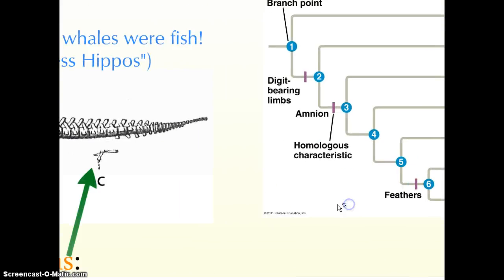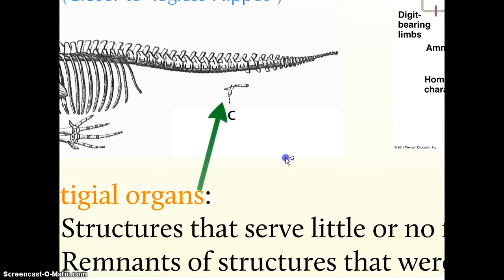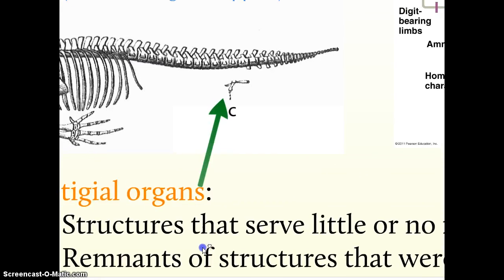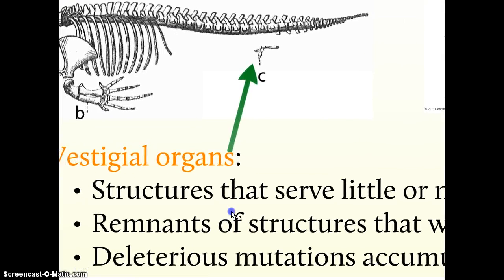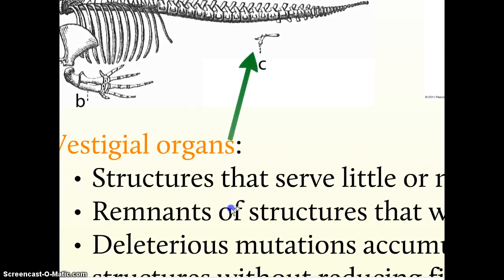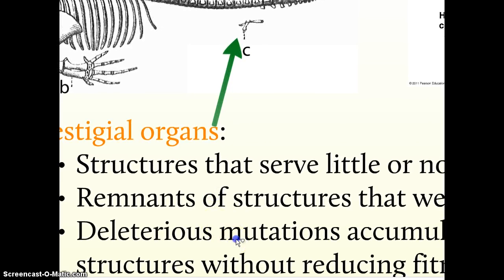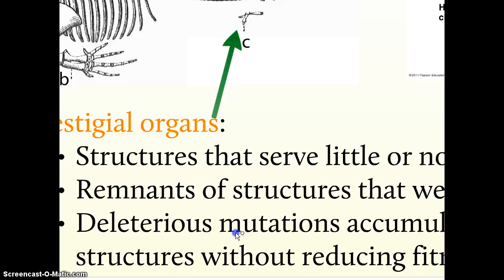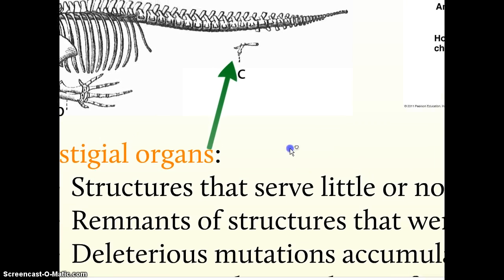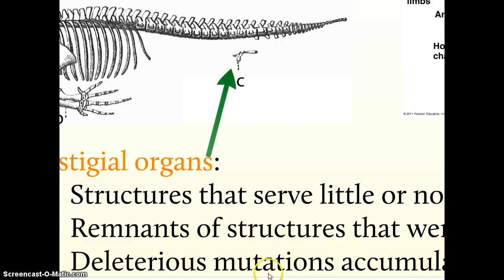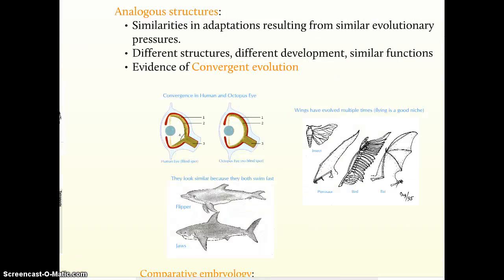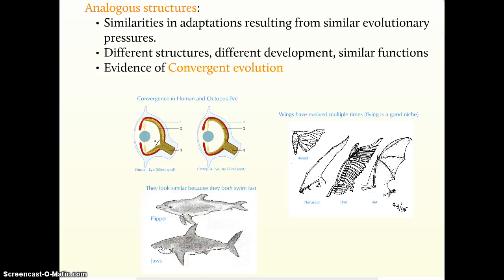A vestigial organ, like the one mentioned here, is a remnant of the past. It was useful in an ancestor species but has lost its function. If the structure no longer serves a useful purpose but isn't selected against by natural selection, mutations or deleterious mutations, harmful mutations, can accumulate over time and reduce the usefulness of that structure until the point where little is left.